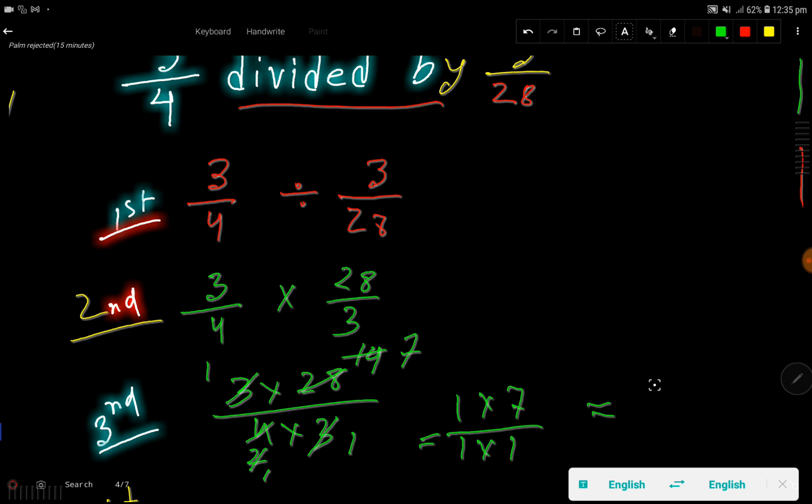So basically we are getting 1 times 7 divided by 1 times 1, so our result is 7. Right, answer 7 over 1, that is answer is 7.